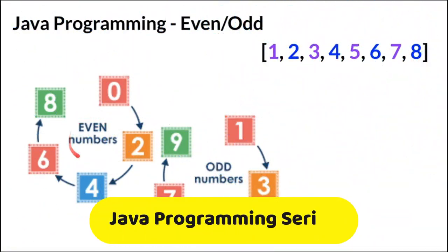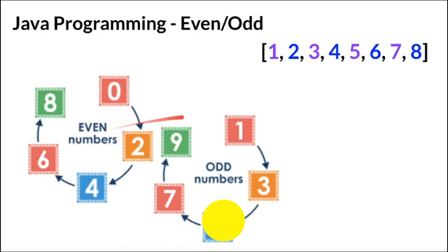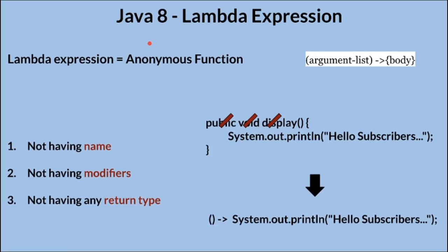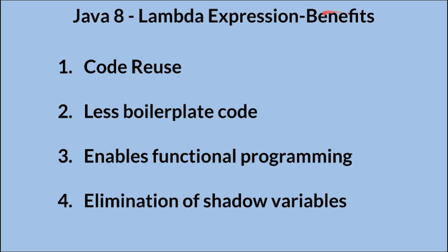Hi friends, in this video I'm going to write a simple Java program to print the even numbers and odd numbers from a given array using the Java lambda expression. I'm going to explain what is Java lambda expression and the benefits of lambda expression. Let's see the program now.